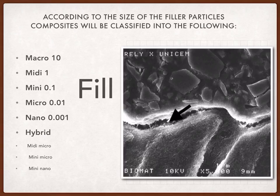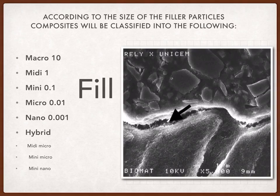According to the size of the filler particles, composites are classified into the following types: macro, midi, mini, micro, nano, and hybrid filler composites, with particle sizes of 10, 1, 0.1, 0.01, 0.001 micrometers (1 nanometer) respectively. The hybrid composite is considered the best type of composite available.